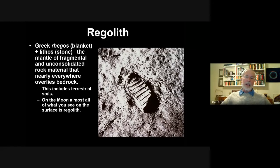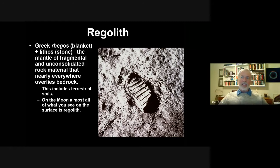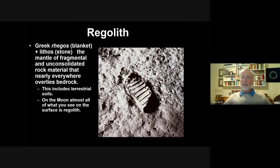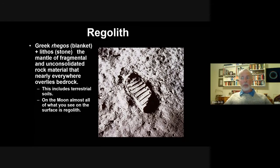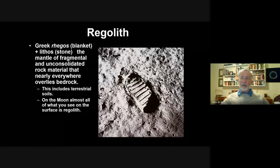I'm mostly a rock guy. I look at the rocks, and regolith is about rocks. Regolith is, from the Greek, regos, a blanket, and lithos, stone. It's really the mantle of fragmented and unconsolidated debris that everywhere covers bedrock. Various kinds of terrestrial soils are actually regolith. Basically, the moon is almost entirely covered with regolith — you see very little bedrock.